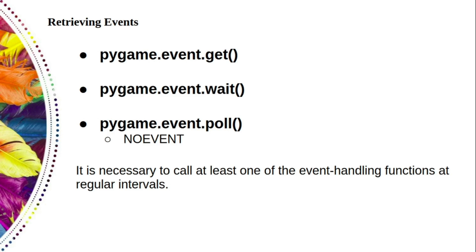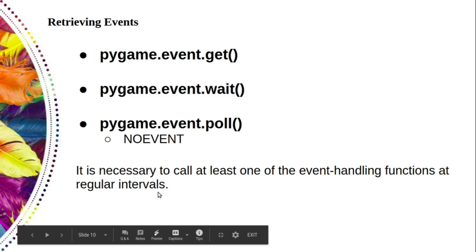There is also one alternative, pygame.event.poll. It basically returns a single event if there is one waiting, or a dummy event of the type no-event if there are no events in the queue. Whatever method we use, it is important to not allow events to build up in a queue because the event queue is limited in size, and events will be lost as the queue overflows. That is why it is necessary to call at least one of these functions.